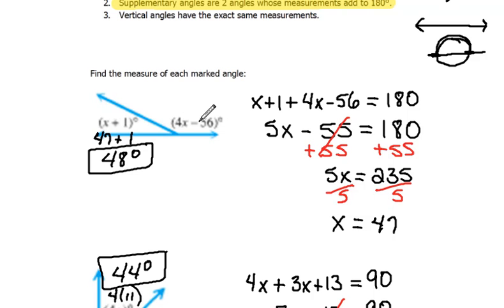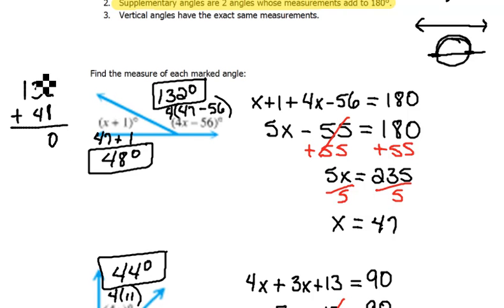The other angle measure, again we could replace the x with 47, and 4 times 47 minus 56 would be 132 degrees. So now again we could double check these because these two angles should add up to be 180 degrees. So if we check it, 132 plus 48 when we add those things together we get 180 degrees. So that does check out.